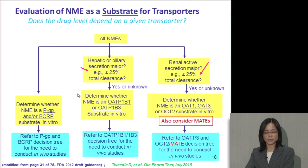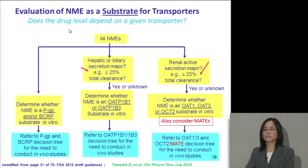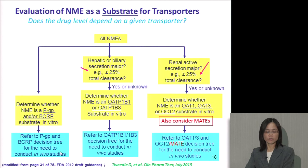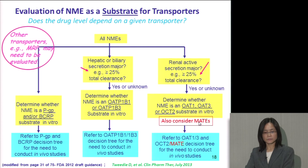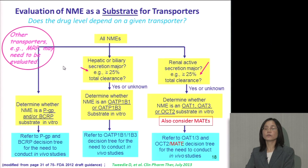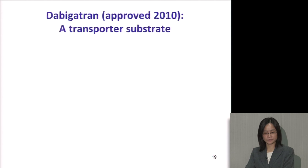This is the framework in our 2012 draft guidance for evaluating the new molecular entity as a substrate of transporters, considering the elimination route. Different transporters use different in vitro systems to study whether the NME is a substrate for PGP, OATP1B1, 1B3, OAT, or OCT transporters. More recently, we know MATE is also important for renally cleared drugs and will be included when we update our guidance. Other transporters beyond the seven in the 2012 guidance also need to be considered.